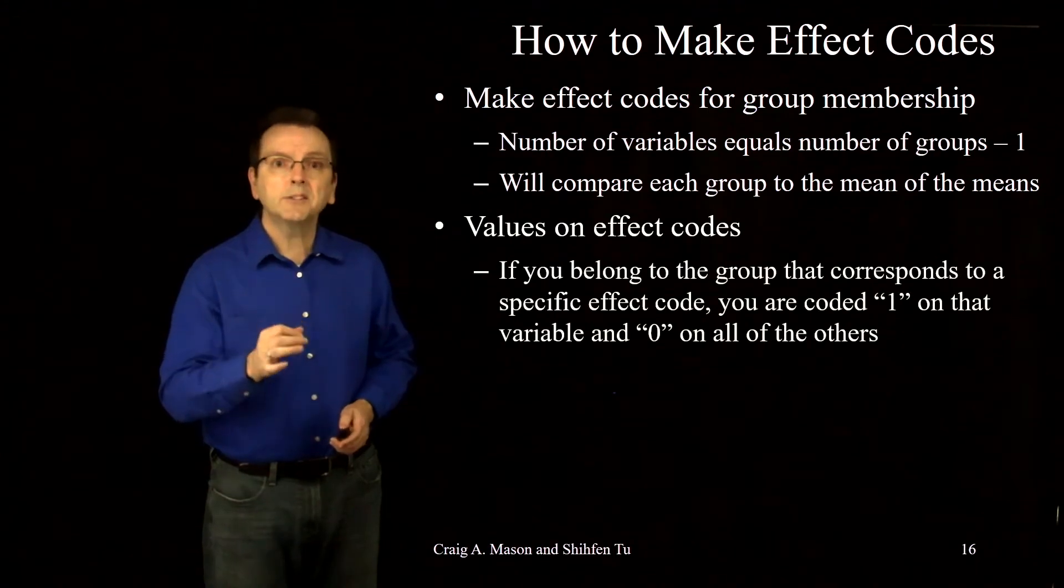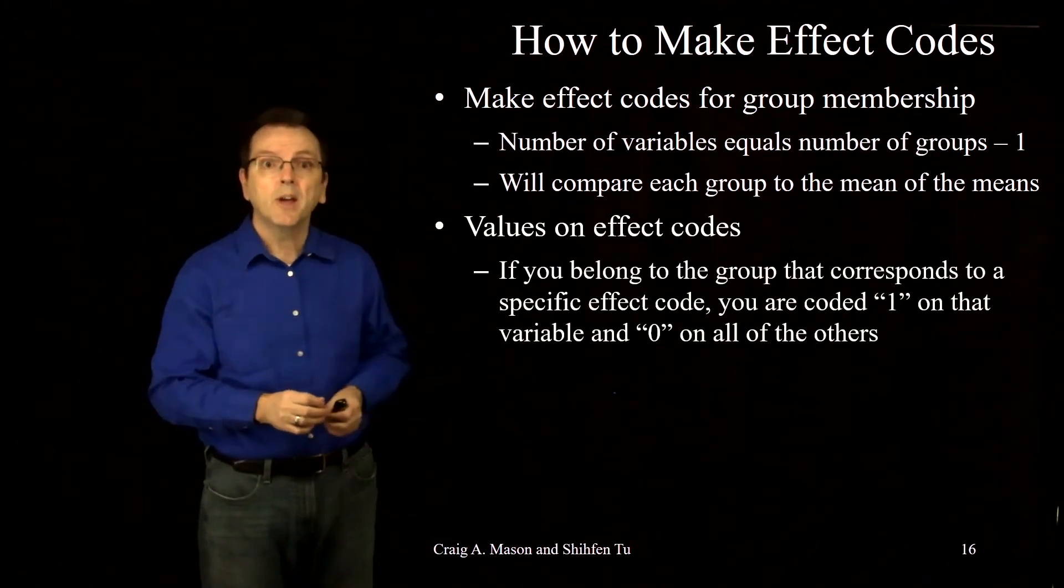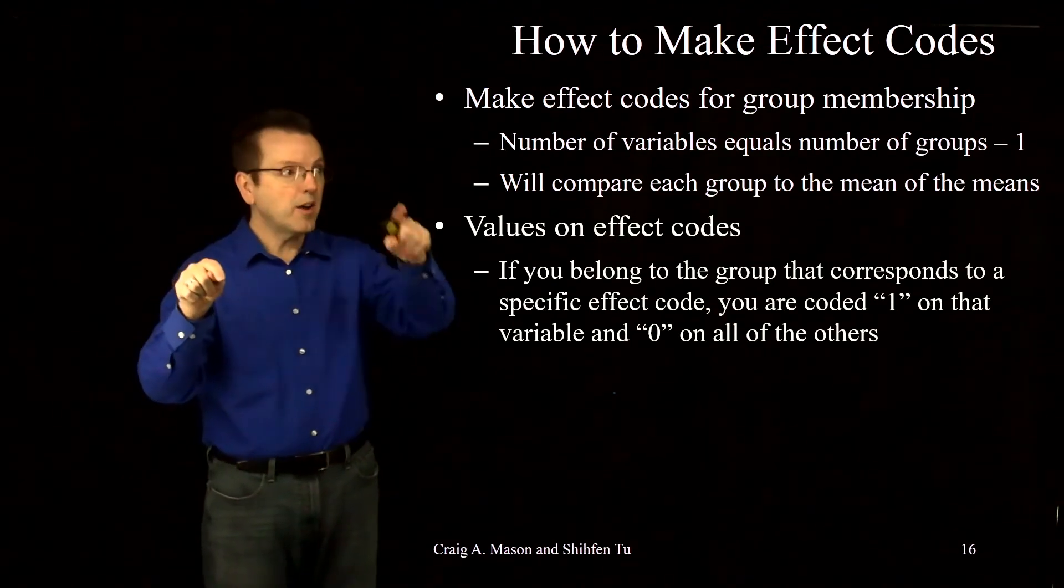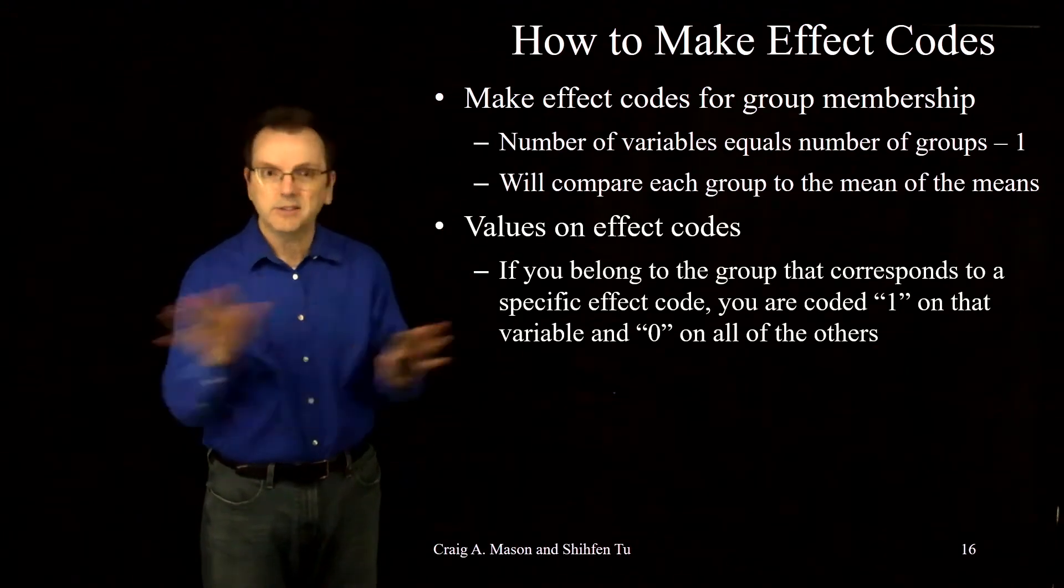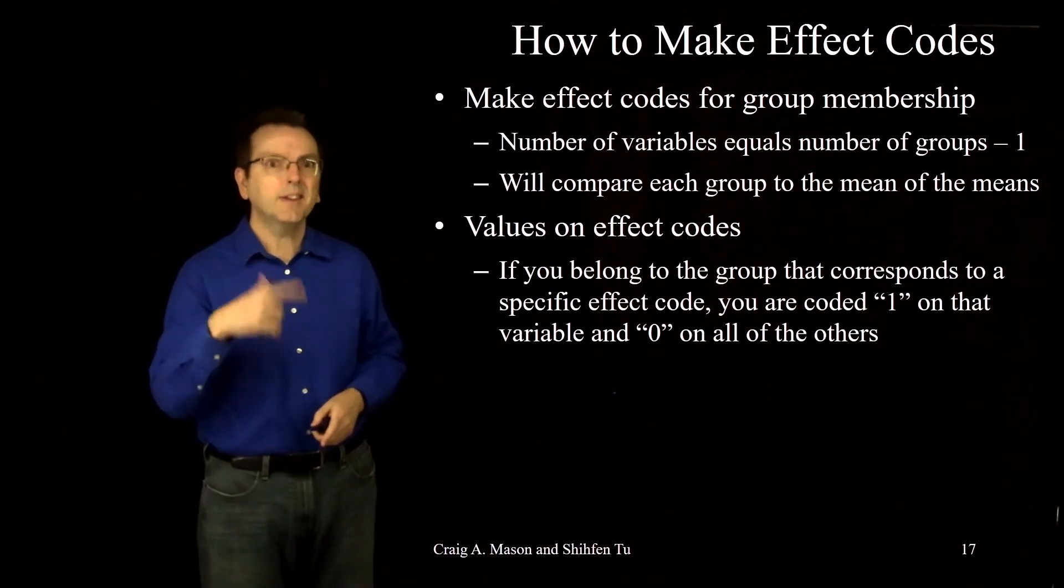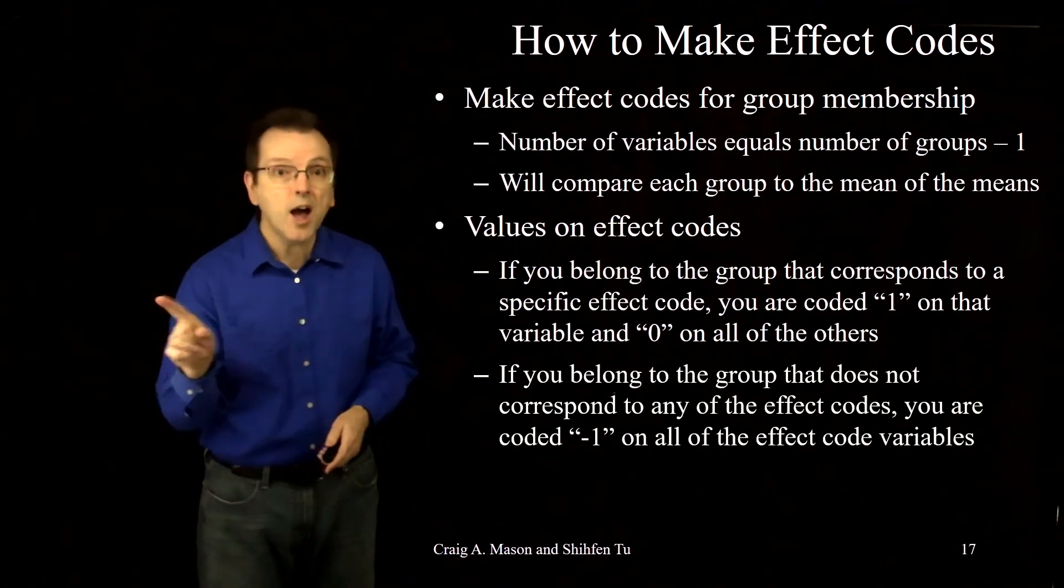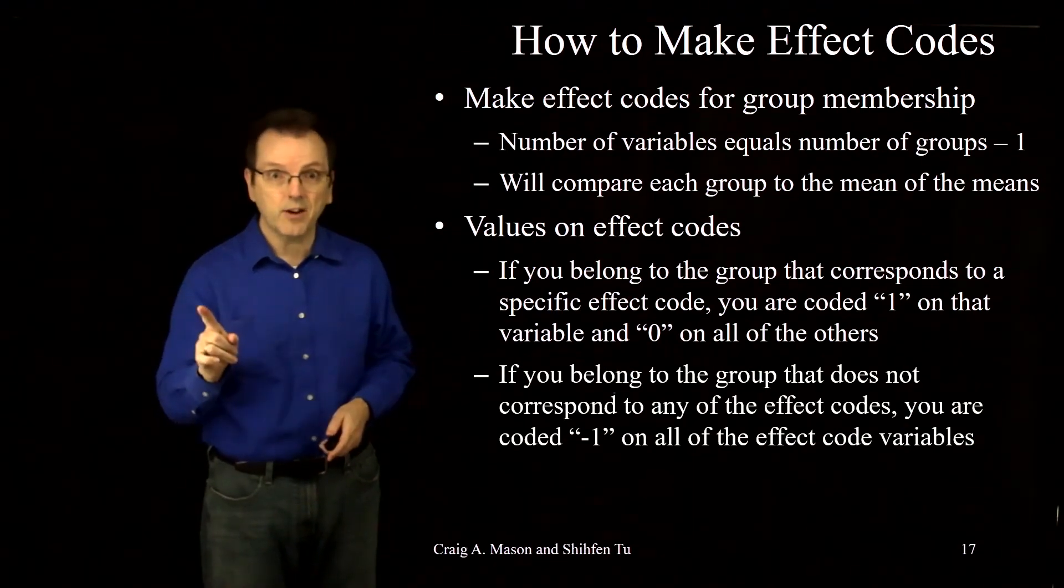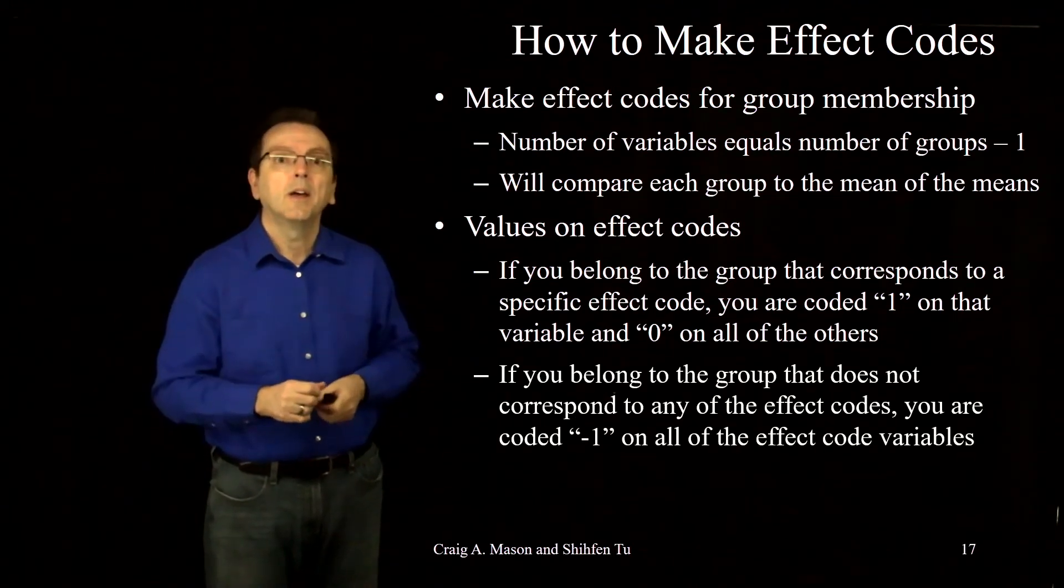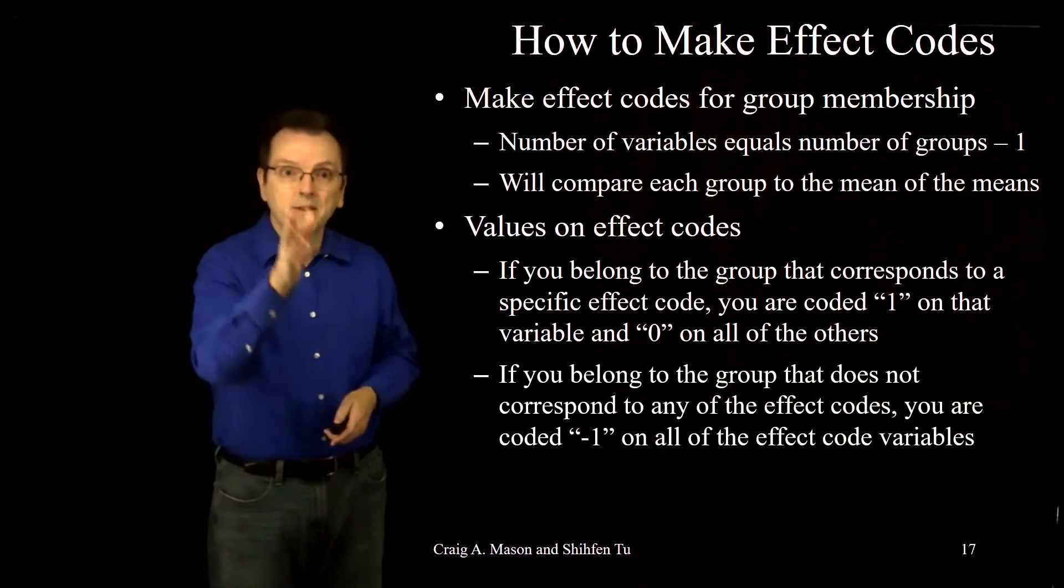First, if someone belongs to the group that corresponds to a specific effect code, they're coded one on that effect code and zero on all of the other effect codes. That's just like what we did with dummy coding. But, and here's the twist. If they belong to the group that does not correspond to any effect code, that last group that doesn't get an effect code, they're coded minus one on all of the effect codes.